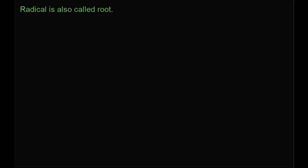Radical is also called root. How we denote the root? We denote root like this. It can be square root or cube root — I will explain all these things later on. Let us take the example root 2. We call this the square root. Why square root? I will explain in this video. So this is called square root of 2.